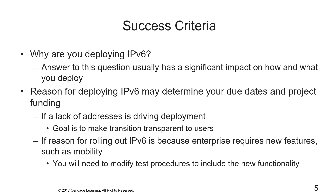In establishing your success criteria, you have to ask — just like any software or hardware project — why are you doing this in the first place? What's the return on investment? What's the impact to the business? How you answer this usually has a big impact on how and what you deploy: are you going to deploy everything or partially? This isn't just specific to IPv6 — in general, for any technical project you need to consider what you're deploying and what success looks like.